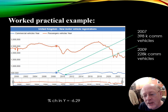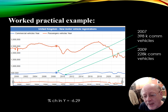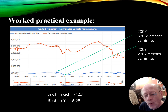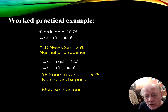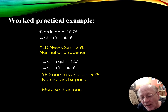From the same website, commercial vehicle registrations in 2007 were 398,000 but by 2009 had fallen to 228,000 — a massive decrease in quantity demanded of 42.7%. That gives an income elasticity of demand of 6.79. So commercial vehicles are also normal and superior, and they are more income elastic than new cars.